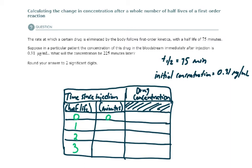our drug concentration is 0.31. And the units of this are micrograms per milliliter. So I'll put the units here, 0.31.